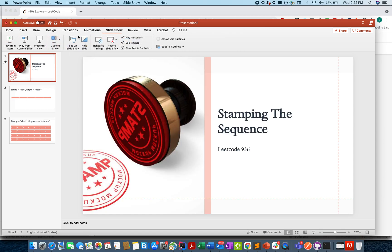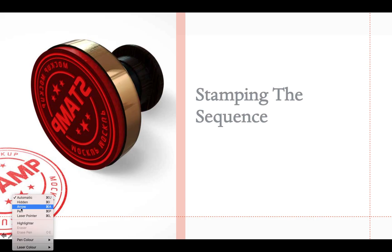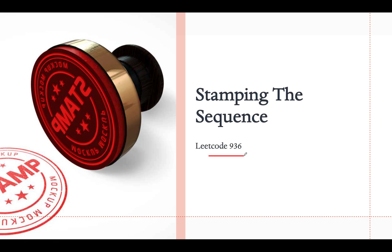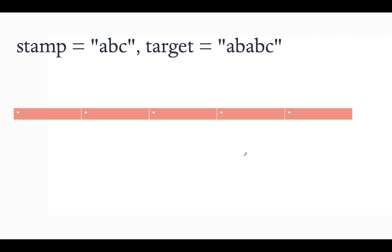Moving on to the presentation — LeetCode 936, this is a hard problem and slightly tricky. The question says you are given a stamp string and the target string, and you need to assume a blank string of equal length as the target string. You need to tell whether you can stamp this blank string so as to generate the target string. If yes, return the indices where stamping needs to be done.